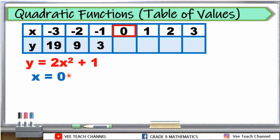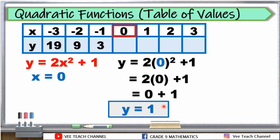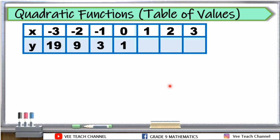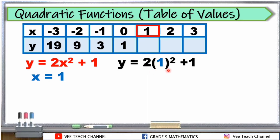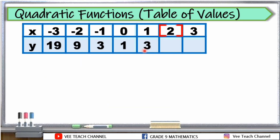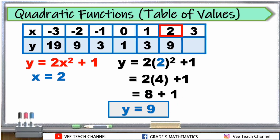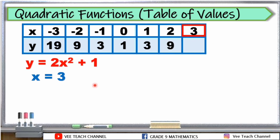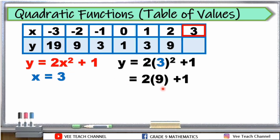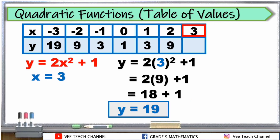Mas madaling i-compute pag x is equal to 0. Papalitan lang natin yung x ng 0. Syempre pag tinimes natin yan, 0 na yung lalabas, kaya ang y na lang natin is 1. If x is equal to 0, y is 1. Next, positive 1 naman ang ating x. Palitan lang natin yung x ng 1. Simplify: 1 squared is 1, then times 2, plus 1 — the answer is 3. Next, kunin natin ang value ng y pag ang x ay 2. Substitute the value of x, simplify: 8 plus 1, the answer is 9. Last one, yung positive 3: palitan si x ng positive 3, simplify — 3 squared is 9, times 2 plus 1, we have 18 plus 1, and y is equal to 19.